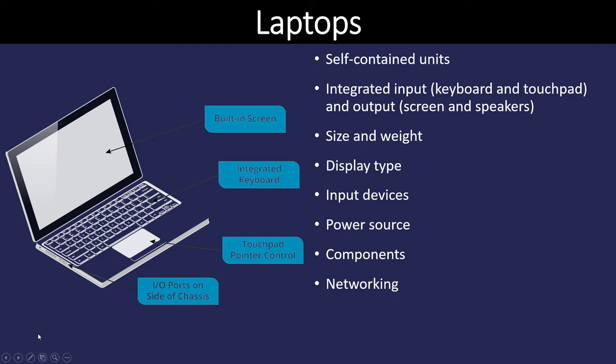A laptop is what most people use for portability right now. They're typically self-contained — the screen, keyboard, touchpad, and ports are all built in. They have an external power source and a battery so they can be portable. They're quite popular and the price has come down considerably; they're only slightly more expensive than a comparable desktop.